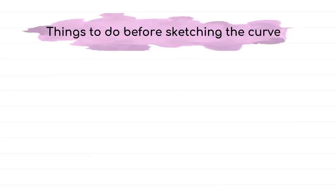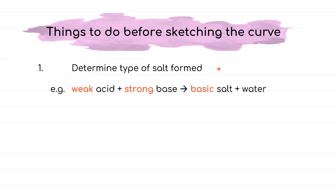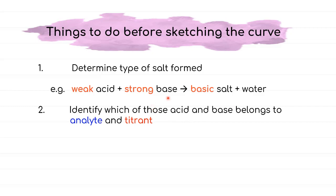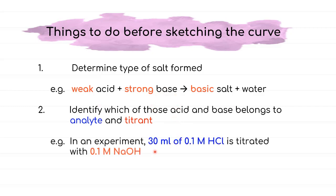Before sketching a curve, you need to determine the type of salt to be formed from the question. Say you have a weak acid reacting with a strong base — you are going to form a basic salt and water. After that, identify which of the two chemicals will be the analyte and which will be the titrant. The substance with a known amount will be the analyte — for example, 30 mL of 0.1 M HCl. The substance with an unknown amount will be the titrant.